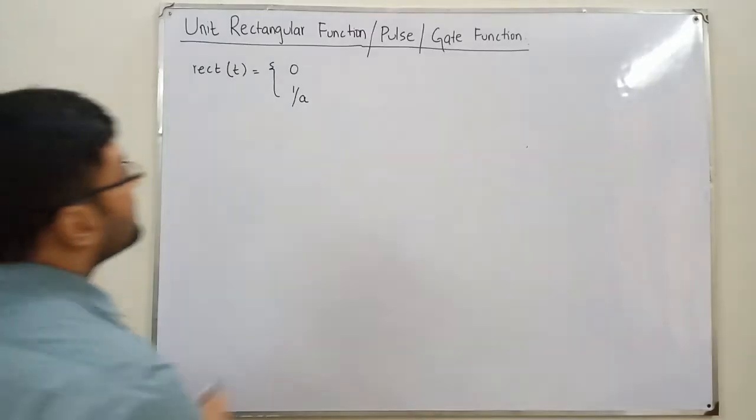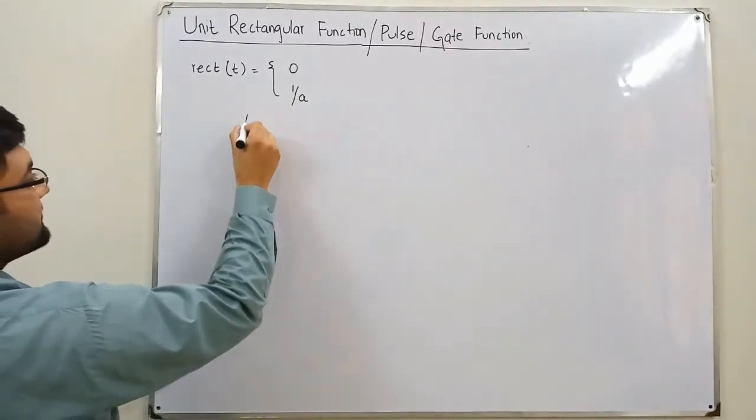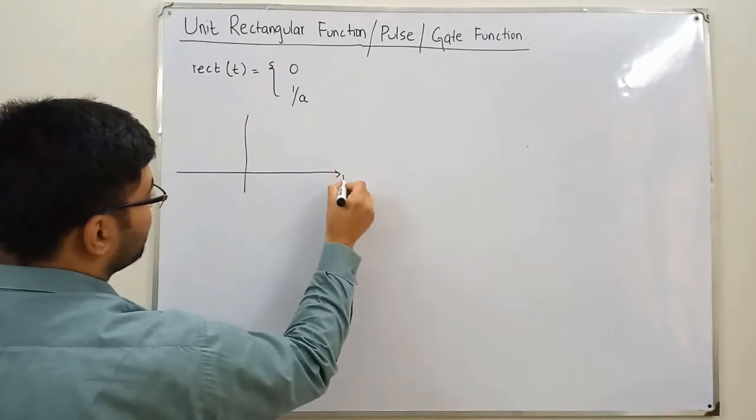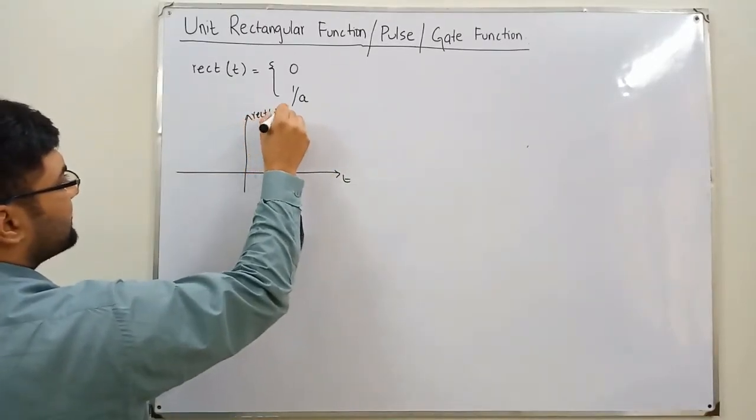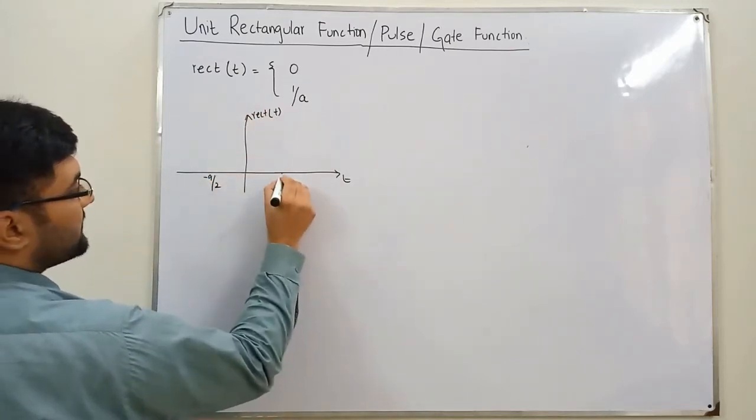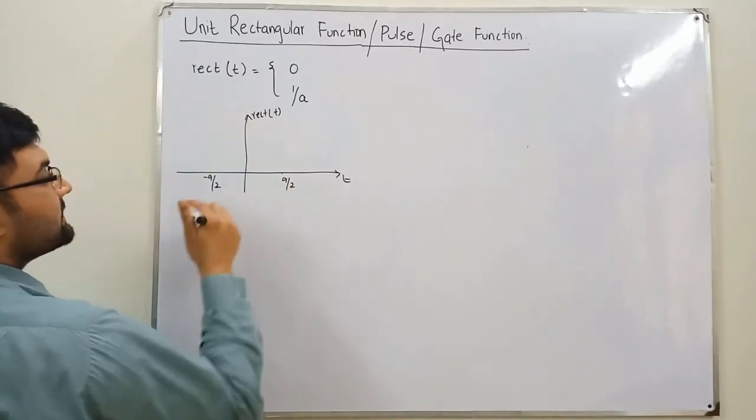First I will draw the diagram because the limits are a little confusing to write. This is the graphical representation for this. This is t, this is rect of t. This is negative a by 2, this is positive a by 2. Within these limits, you have what?